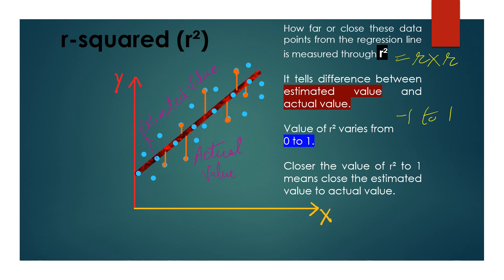The closer the value of r-squared is to 1, the closer the estimated value is to the actual value. For example, if r-squared is 0.95, the actual value and estimated value will be very close to each other. But if r-squared is very small or close to 0, the regression line will not be able to predict the unknown variable accurately, because there will be a huge distance between the estimated value and actual value — and in that case it will not be the line of best fit. If r-squared equals 1, all scatter points fall on the regression line and we can predict the value of y for any given value of x.